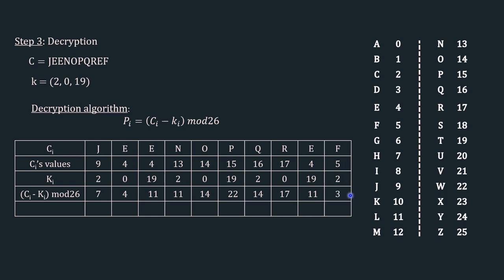The final step is PI. Using the mapping table: 7 is H, 4 is E, 11 is L, 11 is L, 14 is O, 22 is W, 14 is O, 17 is R, 11 is L, and 3 is D.